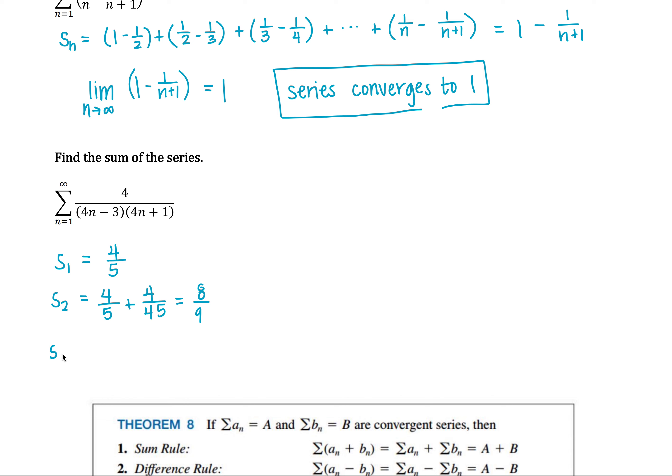The third one would be 4 fifths plus 4 over 45 plus 4 over 117. If you get a common denominator, add those together and reduce, you get 12 over 13.